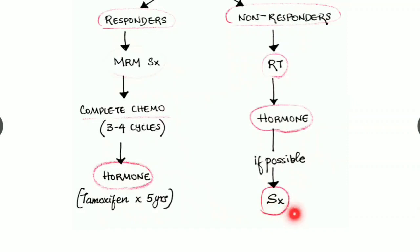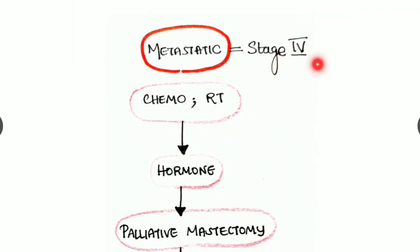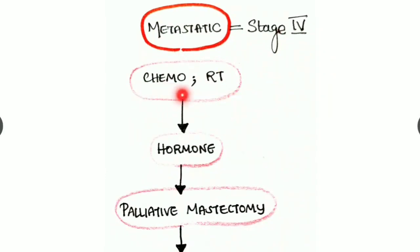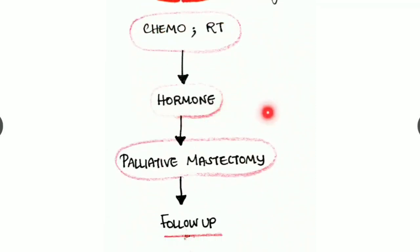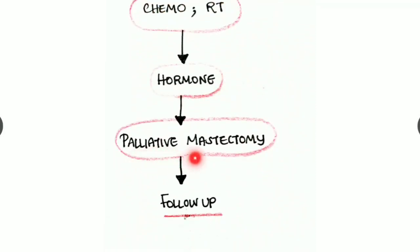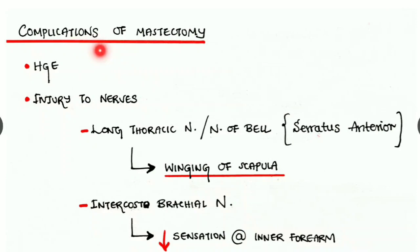Regarding stage 4, which is a metastatic stage, we have to go for both chemo as well as radiotherapy and go for hormone therapy. And if possible, do a palliative mastectomy and then follow up the patient.